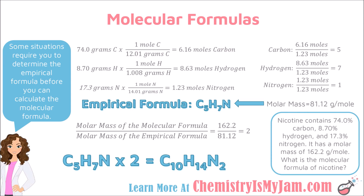Step 3: take the smallest mole value — in this case nitrogen at 1.23 — and divide all mole values by it. So 6.16 ÷ 1.23 = 5, 8.63 ÷ 1.23 = 7, and 1.23 ÷ 1.23 = 1. These values become the subscripts in the empirical formula. The empirical formula for nicotine is C5H7N.